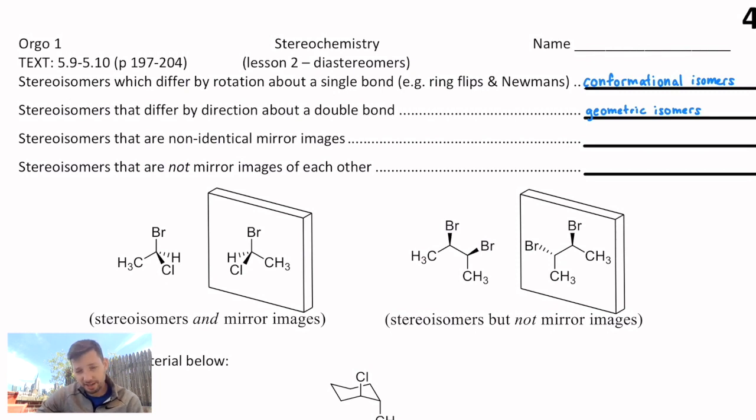However, then we get to stereoisomers which are non-identical mirror images, that was in yesterday's lesson, that's enantiomers, the two different non-identical mirror images that are stereoisomers. We'll look at that again today and here on out.